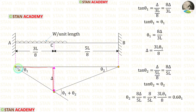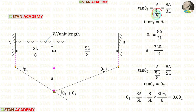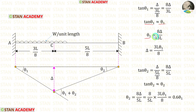Taking the left triangle: tan(theta1) = delta / (3L/8). Rearranging, tan(theta1) = 8·delta / (3L). Since theta1 is very small, tan(theta1) ≈ theta1, so theta1 = 8·delta/(3L), which gives delta = 3L·theta1/8.